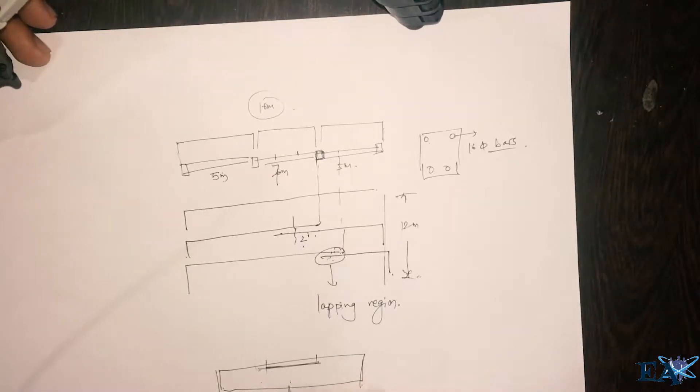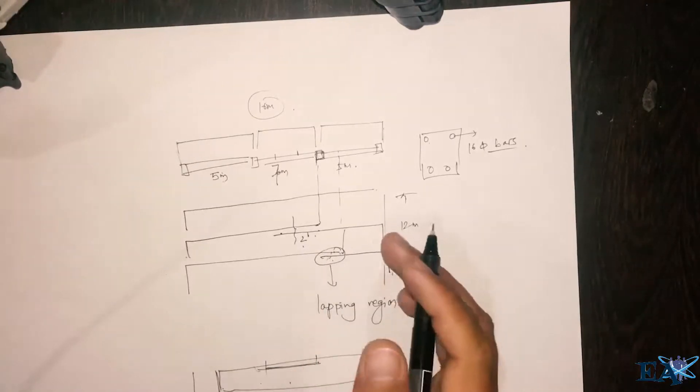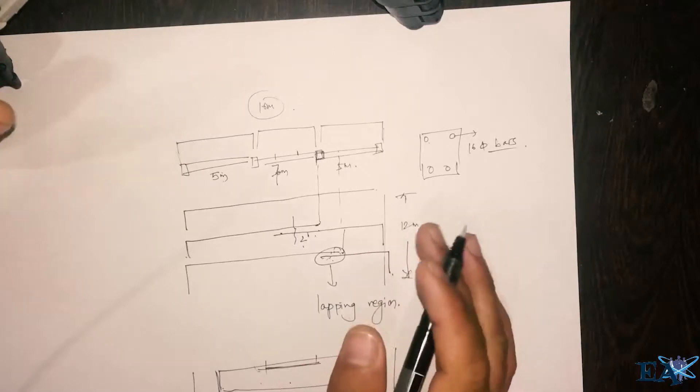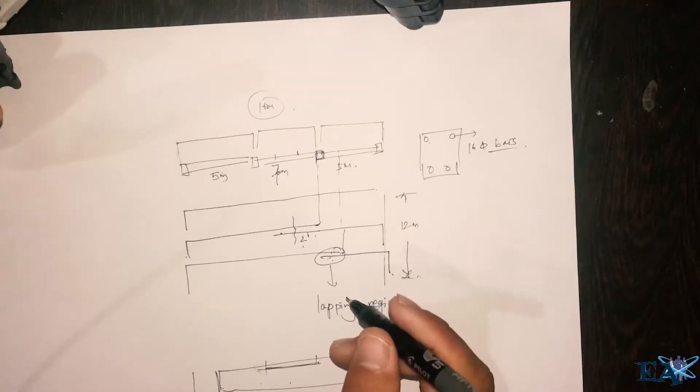And if it's the bottom bar, you have to make your lap. Let's assume that these are the columns, so you have to make your lap leaving two feet from the column. And the lapping length depends upon the grade of the concrete that you're using and the grade of the steel that you're using.